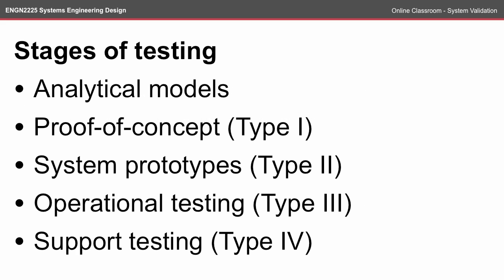There are five stages of testing that we're considering at this stage. The first step, analytical models, is really at the conceptual stage of the design. Proof of concept is where you start testing some of the assumptions that you've made, and system prototype starts to look at the interrelationships between the different subsystems. Operational testing looks at the product or design out in the real world when real people are using it. And support testing is when the product is out there and you're providing support to the design.